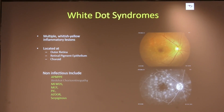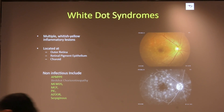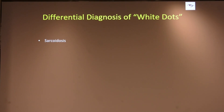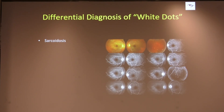The non-infectious white dot syndromes include bird shots — included only for academics as we don't see bird shots in India — MEWDS, multifocal choroiditis with pan-uveitis, punctate inner choroidopathy, serpiginous, and AZER. It's worth mentioning that dots can also be seen in the periphery, like Dalen-Fuchs nodules, in sympathetic ophthalmia or even in sarcoidosis over time.